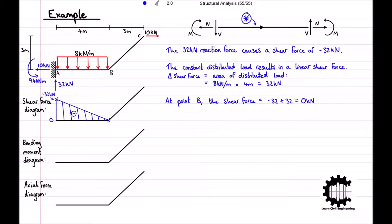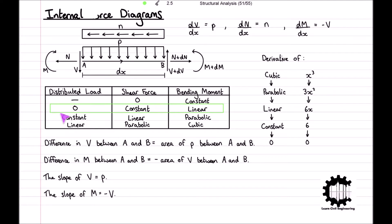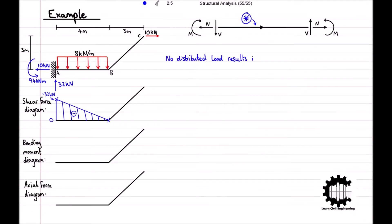Now we need to do the same from point B to point C. There is no distributed load being applied to the bar from point B to point C, and therefore the shear force must be constant along the bar. To calculate this constant value we must determine the shear force being applied to the entire length of the section. The only force being applied to bar BC is the horizontal force of 10 kilonewtons acting in the right direction.